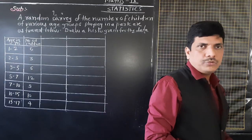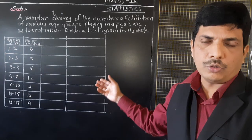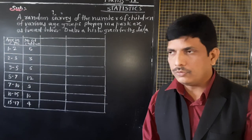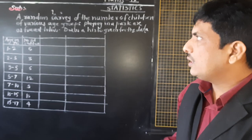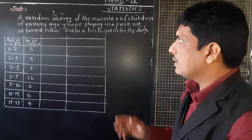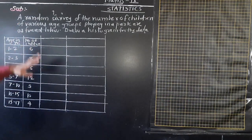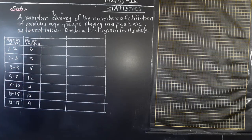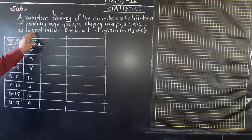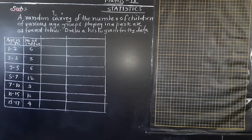Hello everybody. Now we are going to see one problem that was given in yesterday's worksheet, worksheet number 7. We need to do some changes in that. So we will see this example - how to solve it. What is the example? Example C: a random survey of the numbers of children of various age groups claimed in a path are as found below. Draw a histogram for the data.